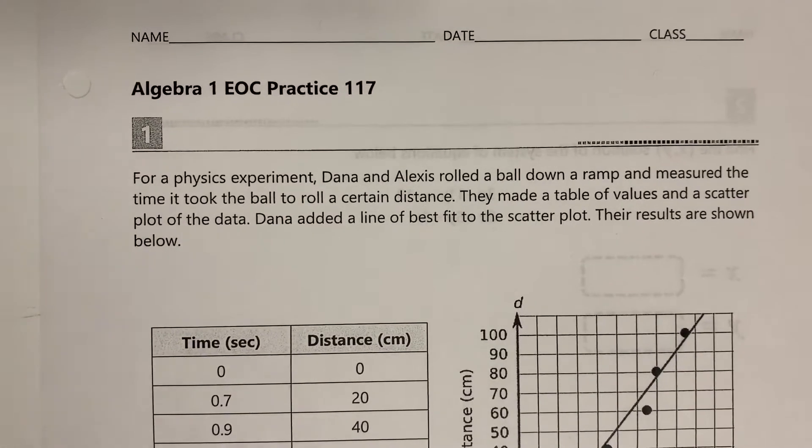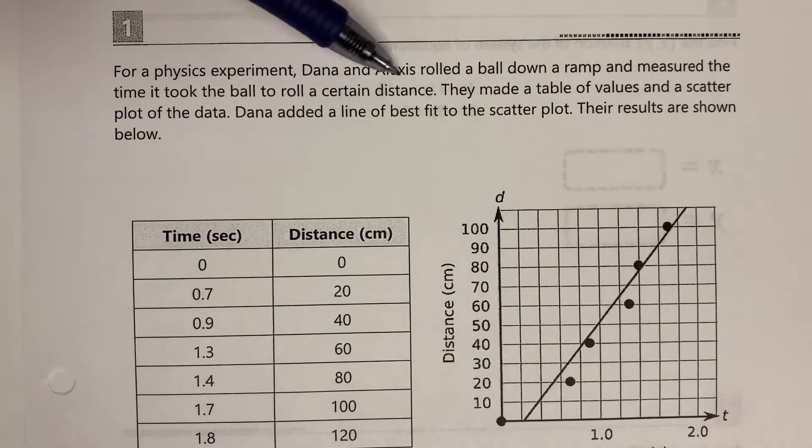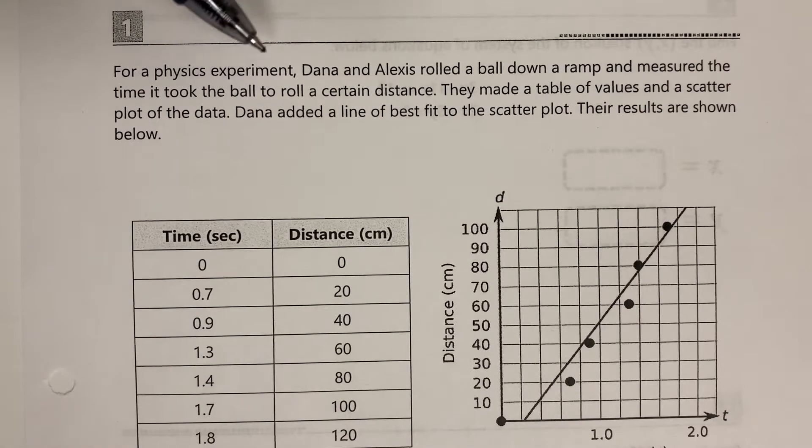Hey guys, in this video we're going to look at the solutions to Algebra 1 EOC practice 117, starting with problem number one. Problem number one says for a physics experiment, Dana and Alexis rolled a ball down a ramp and measured the time it took the ball to roll a certain distance. They made a table of values and a scatter plot of the data.